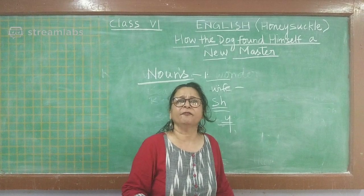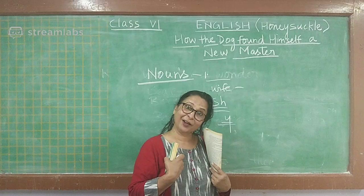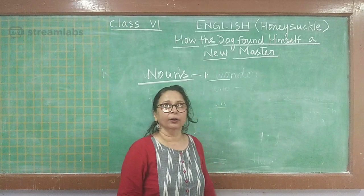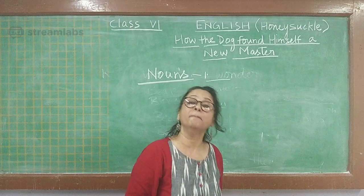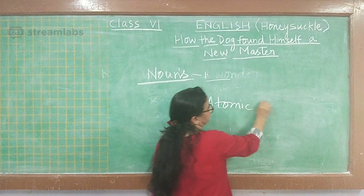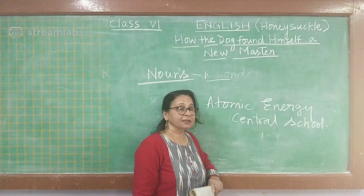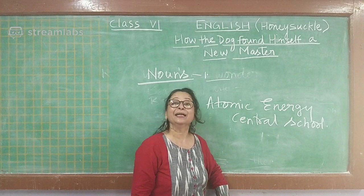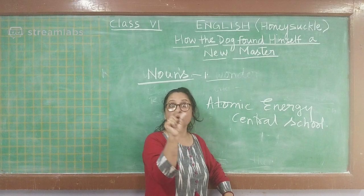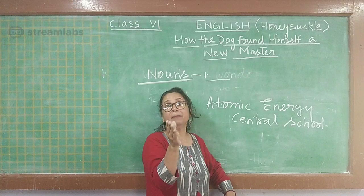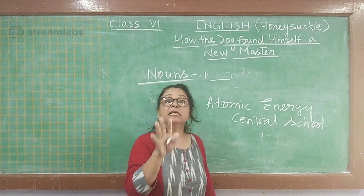Then we come to proper nouns — specific names. For example, a person's name or 'Atomic Energy Central School' — that is a proper noun. When two or three words form one noun together, it is called a compound noun: 'Atomic Energy Central School' is a compound noun. Other examples: touchscreen — a verb and noun combined; whiteboard, email — adjective and noun combined. All these are compound nouns.